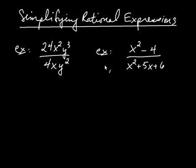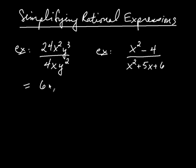Here we're going to talk about what's called simplifying rational expressions. So when you see an expression like this, your first instinct might be to simplify. So let's see: 4 goes into 24, 6 times. And x squared divided by x is x. And y cubed divided by y squared is just y. So we have simplified that rational expression.